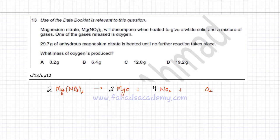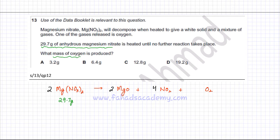You need this balanced equation to solve this question. Now the question has given us the mass of anhydrous magnesium nitrate, which basically means that it's without water. So the mass of magnesium nitrate is given, it's 29.7 grams, and it's asking us to find the mass of oxygen that is produced.